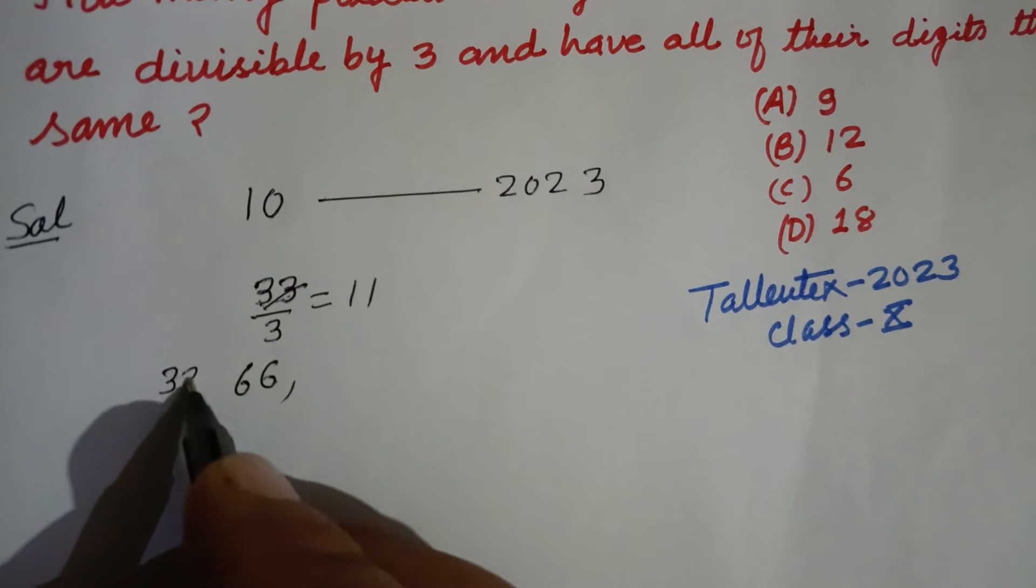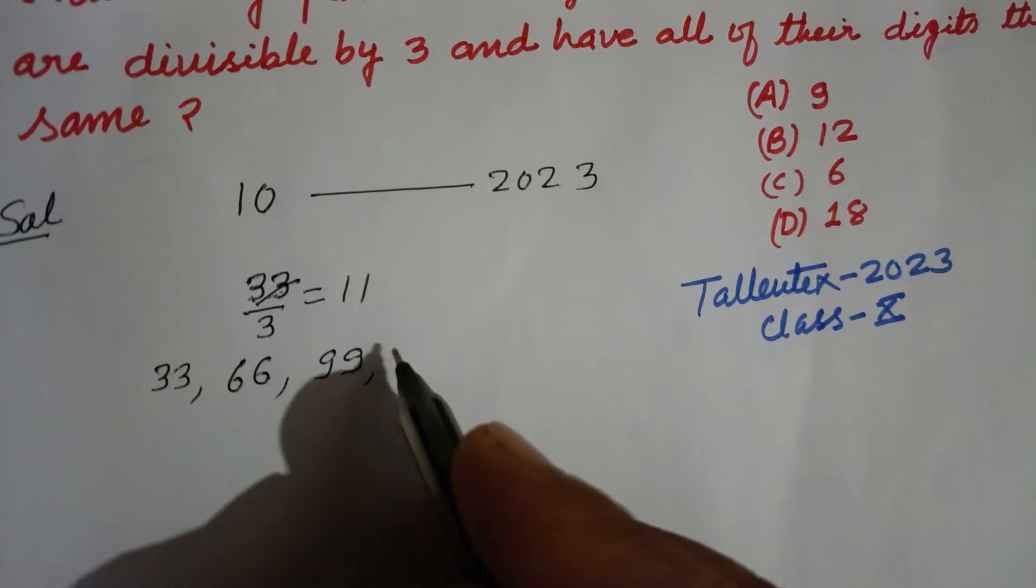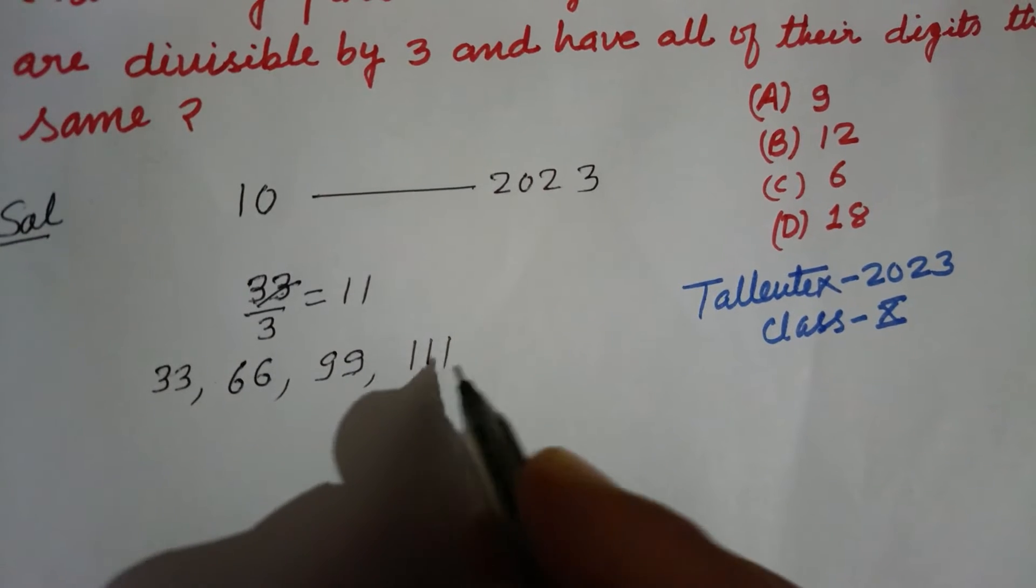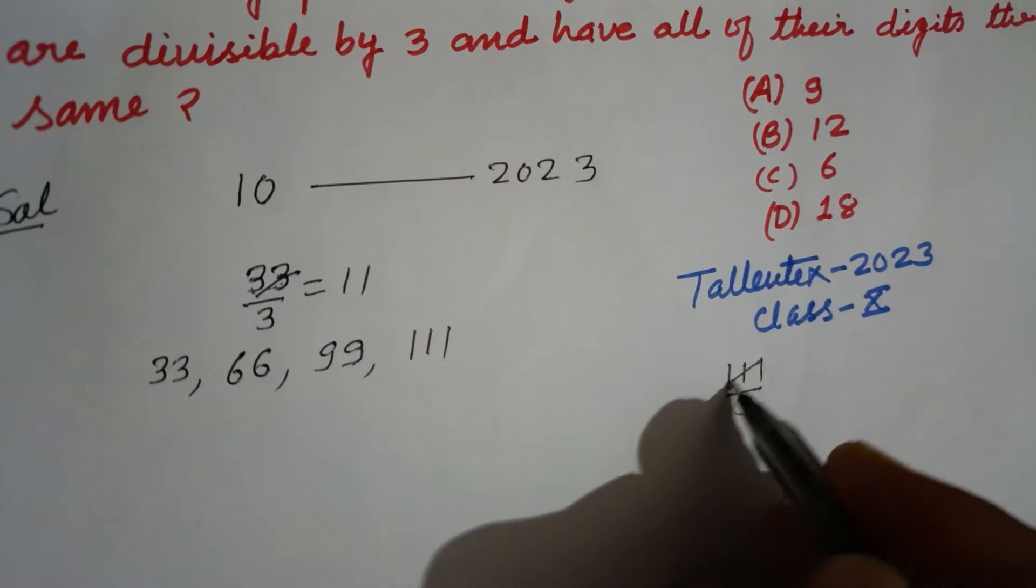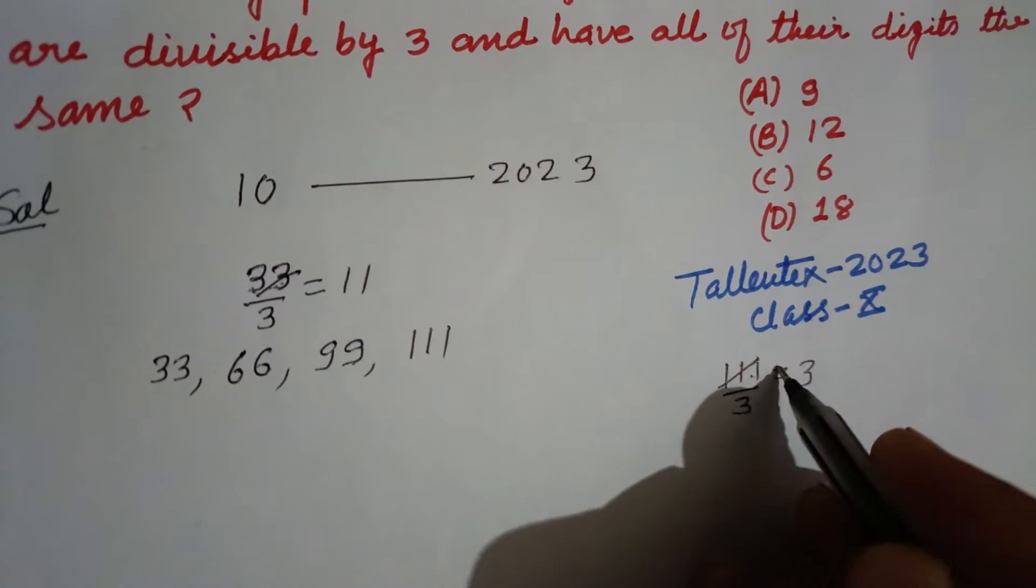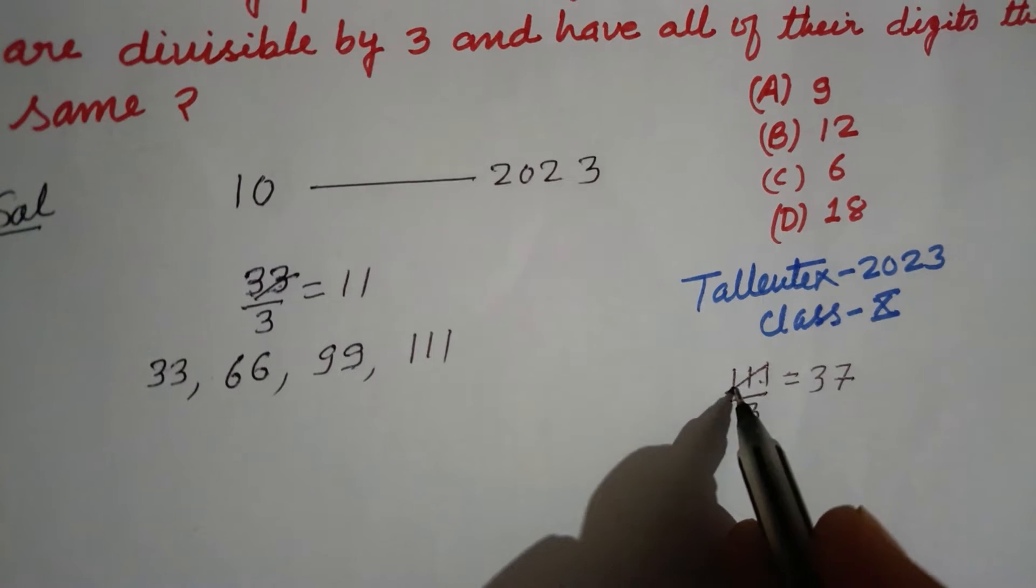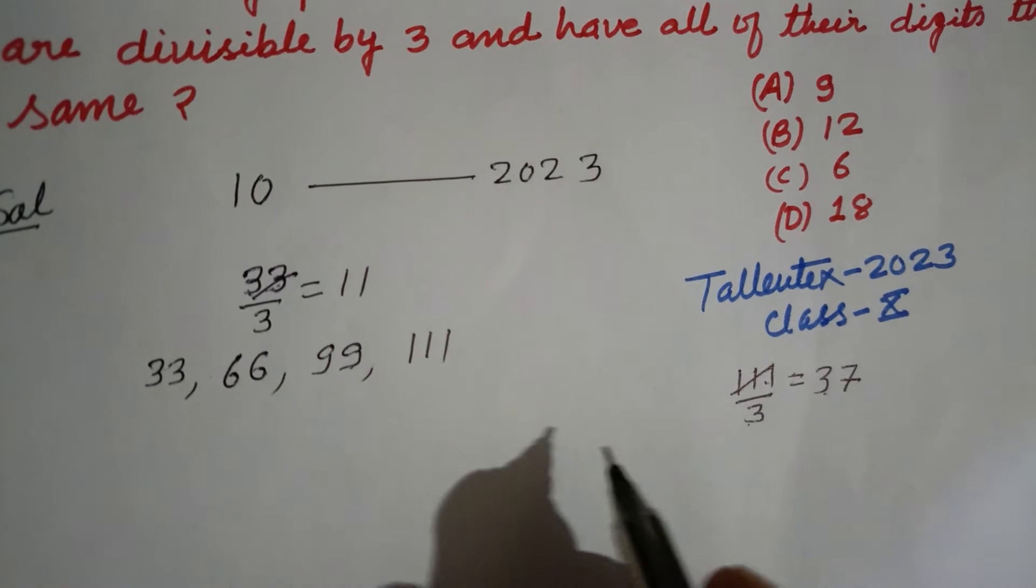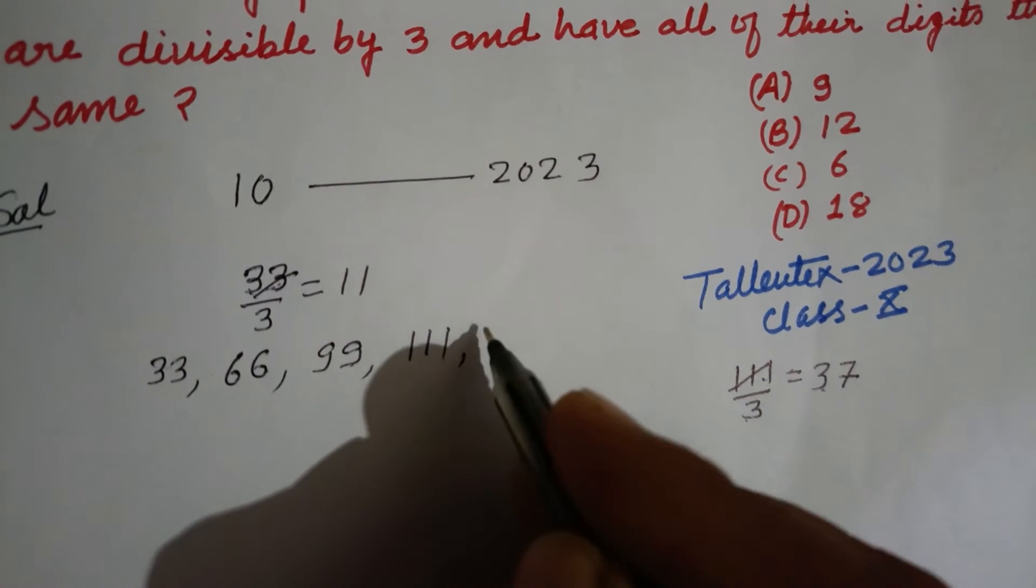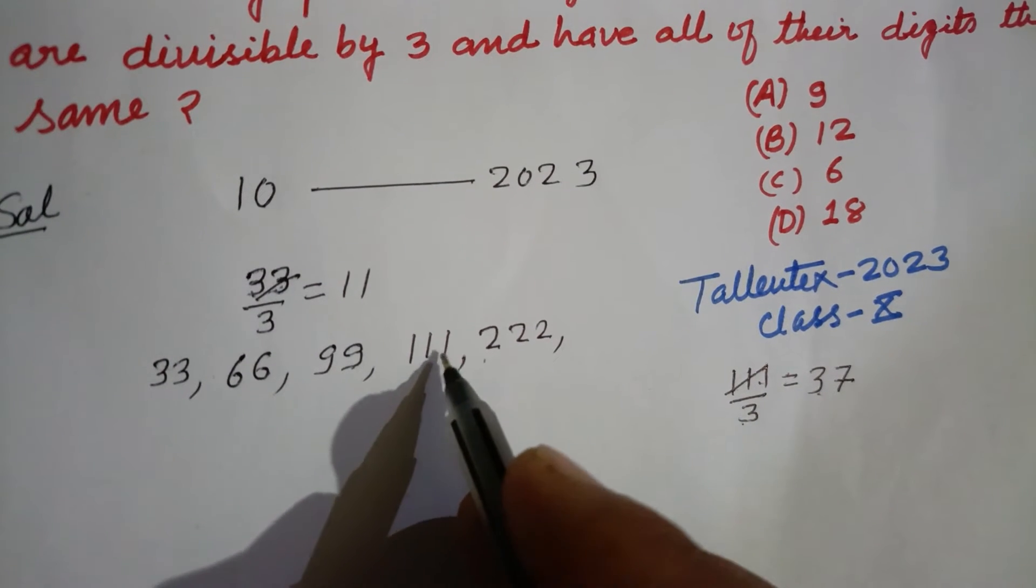Next number is 99, and then 111. 111 is divisible by 3: 3 into 3 is 9, 2 remains, 21 divided by 3 is 7, so 111 divided by 3 is 37. Now 222 is also divisible because if we take 2 common, we get 111.